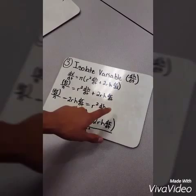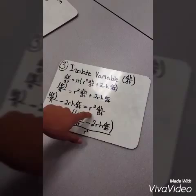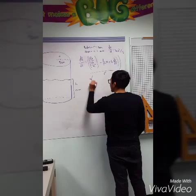Now we subtract 2rh dr/dt from both sides. dV/dt over π minus 2rh dr/dt equals r² dh/dt. Now, we divide by r² on both sides. dh/dt equals (dV/dt over π minus 2rh dr/dt) all over r². Now that we have solved for dh/dt,